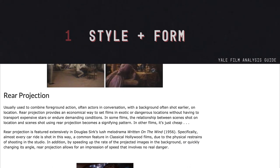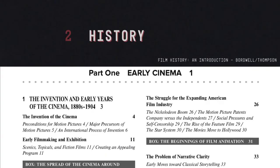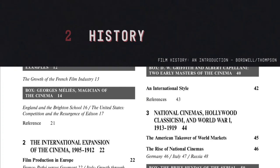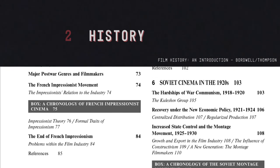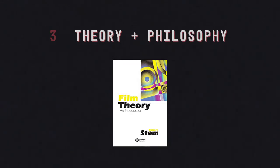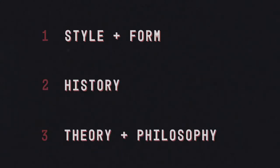Once you have this foundation I would then recommend acquiring a general overview of the major movements in film history and the technological advancements that occurred along the way, to get a general idea of how the medium has evolved over time and around the world. After which you will then be in a good position to broach the more theoretical and philosophical works on cinema. With that being said, the books I've selected fall into these three broad areas: there are two books on film style, two on film history, and six on film theory and/or philosophy. I've also included links to all of these resources in the description box below.